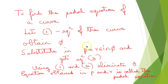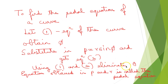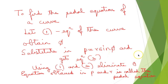Which is what we had to prove. Now to find the pedal equation of a curve: let equation 1 be the equation of the curve. Obtain φ and substitute into p = r sin φ. Using equations 1 and 2, eliminate θ, and the equation obtained in p and r is called the pedal equation. We will see how to do this through an example.